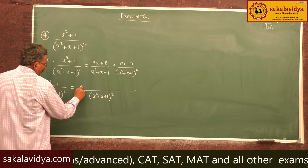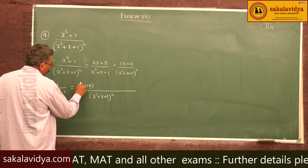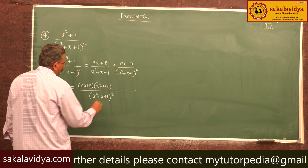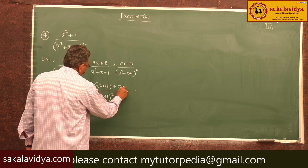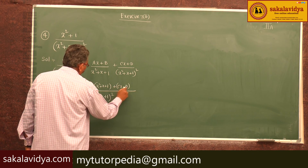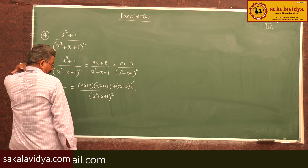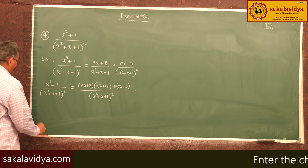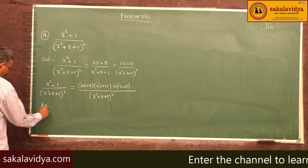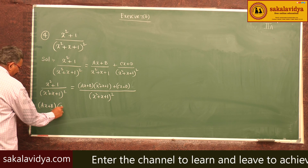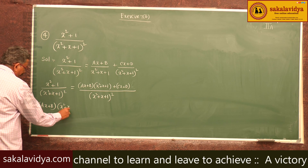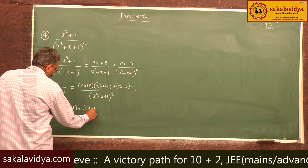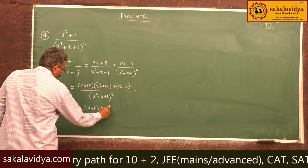Multiplying both sides by (x²+x+1)², we get: (Ax+B)(x²+x+1) + (Cx+D) = x²+1.